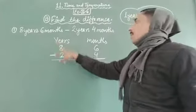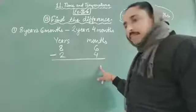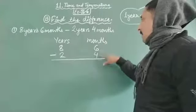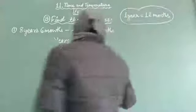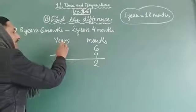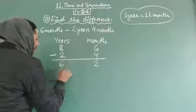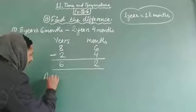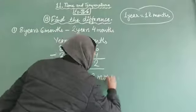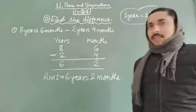यहाँ देखें: 8 years 6 months, उसके बाद minus 2 years 4 months। Our first step is subtract months — 6 minus 4 equals 2 months। Next step: subtract years — 8 minus 2 equals 6. So in this way our required answer is 6 years 2 months। इस तरीके से आसानी से subtract कर सकते हैं।